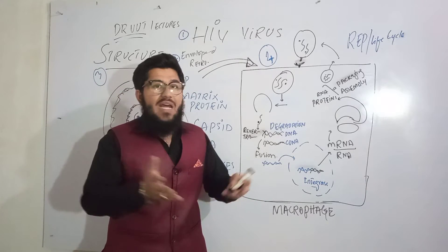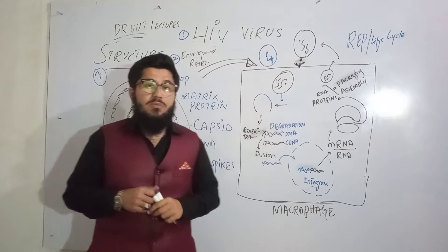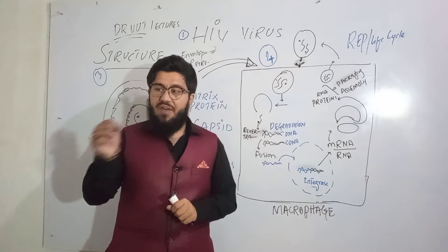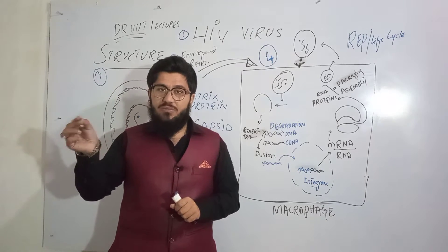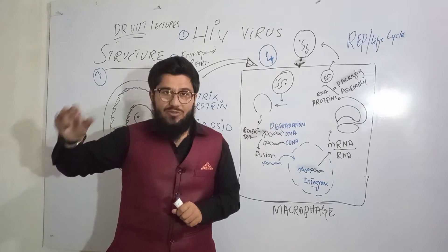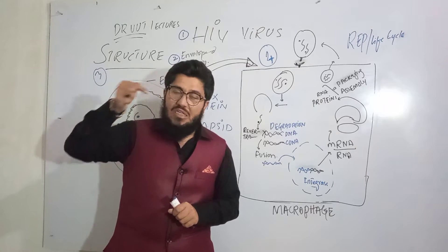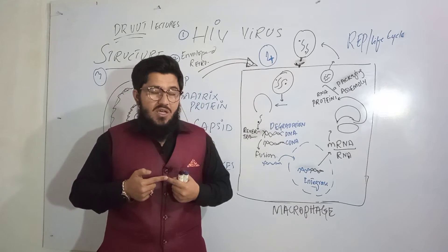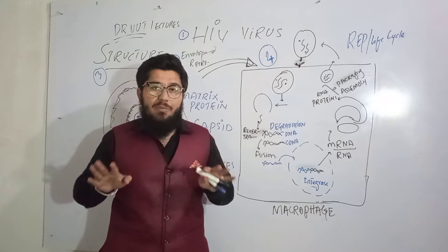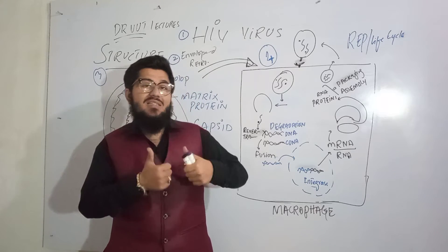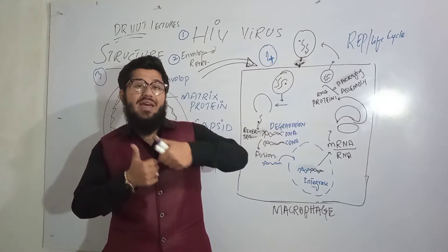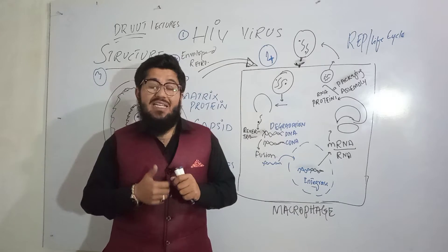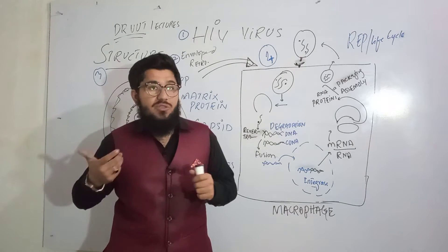What happens if our immune system becomes weak? If any antigen — meaning a pathogen — enters into the body, then our immune system is no longer able to fight against that particular antigen, or more specifically, against that pathogen.